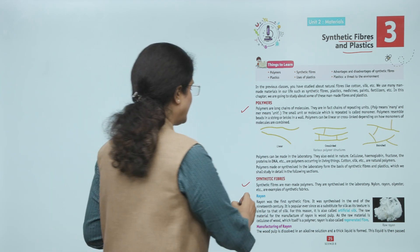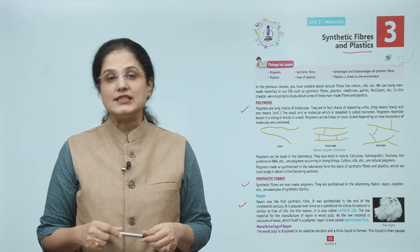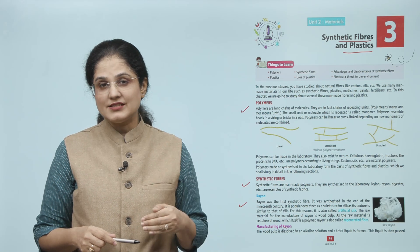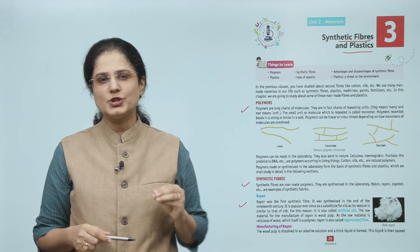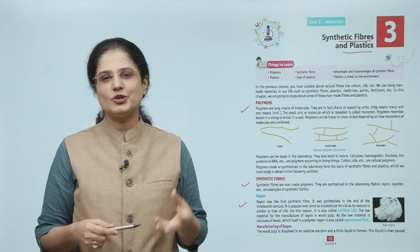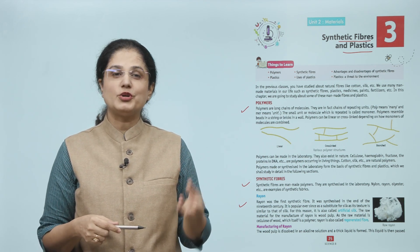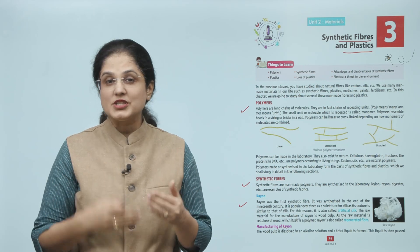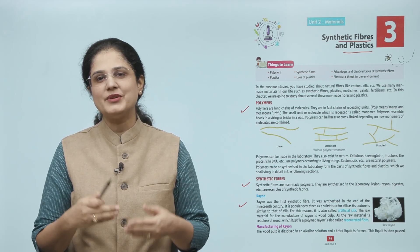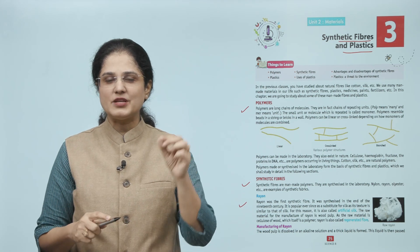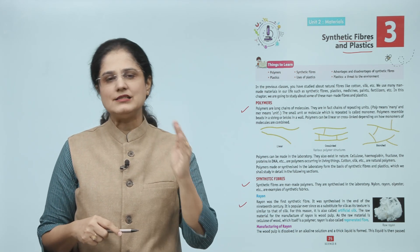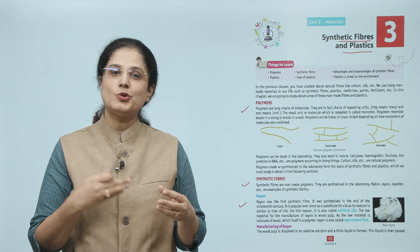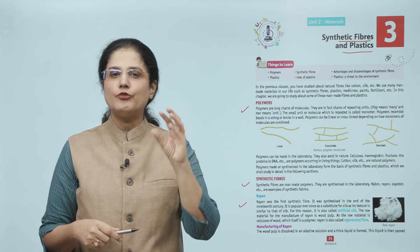Synthetic fibers are man-made polymers. They are synthesized in the laboratory. Nylon, rayon, polyester are examples of synthetic fabrics. Let us first look at rayon. Rayon was the first synthetic fiber. It was synthesized in the end of the 19th century. It is popular ever since as a substitute for silk as its texture is similar to that of silk. For this reason it is also called artificial silk. The raw material for the manufacture of rayon is wood pulp.